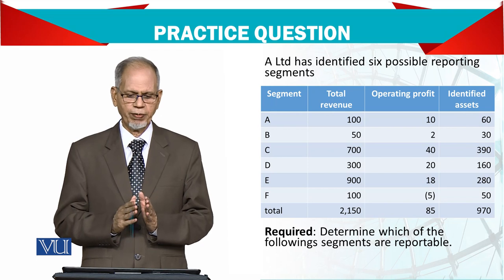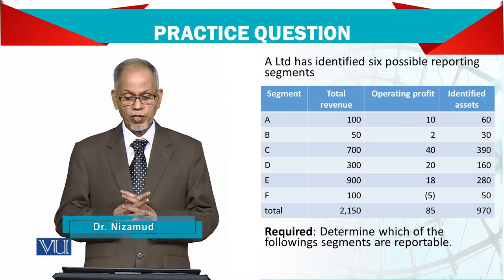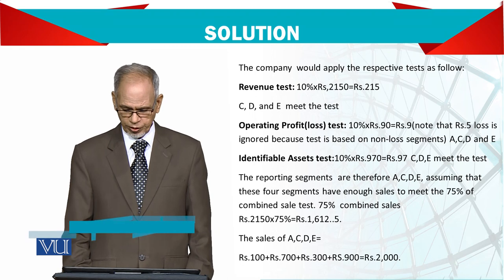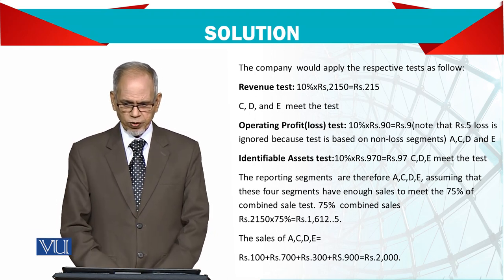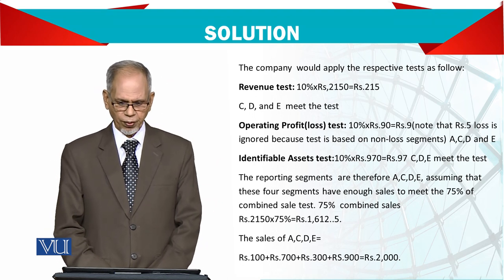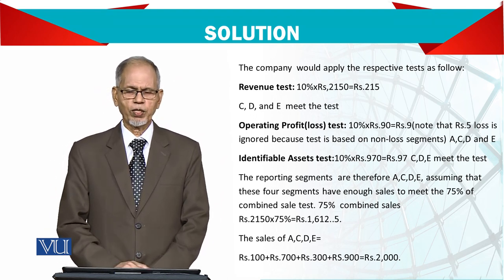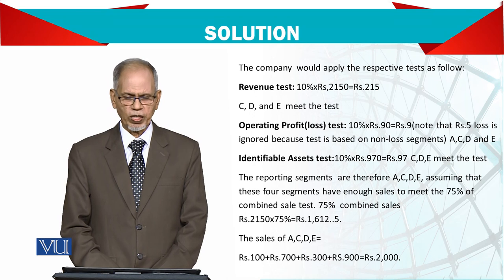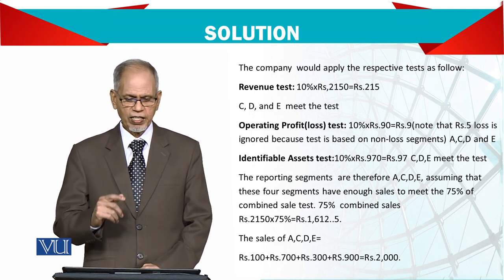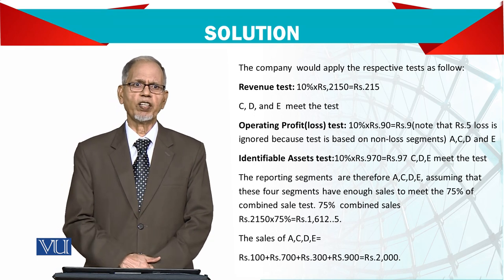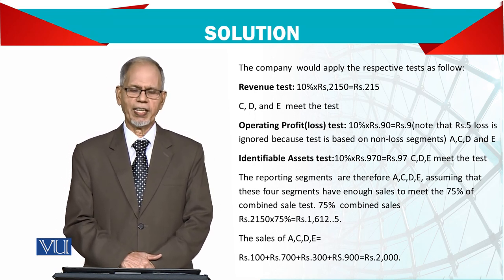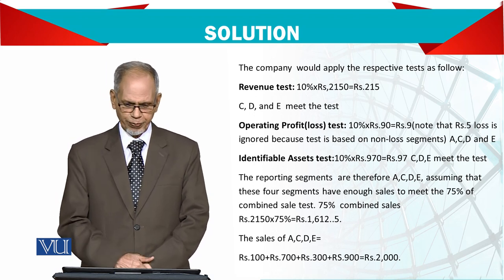From segments A, B, C, D, E, and F, we determine which can be treated as a reporting segment. The company would apply the respective tests as follows. Revenue test: total sales are 2,150, so 10% is 215.